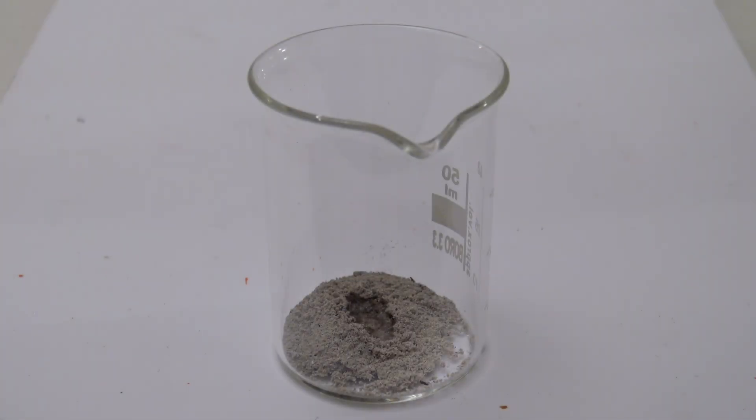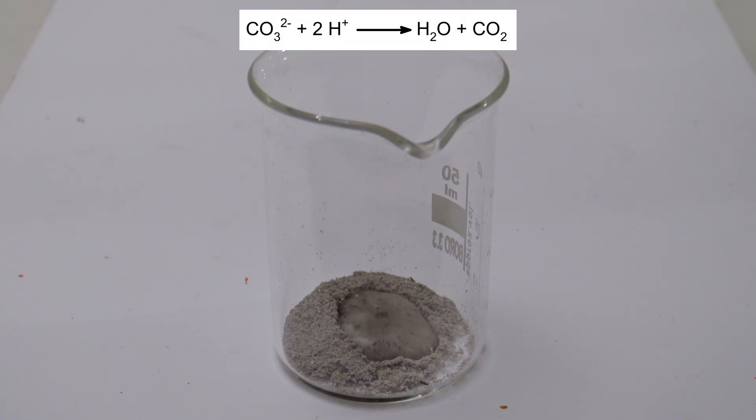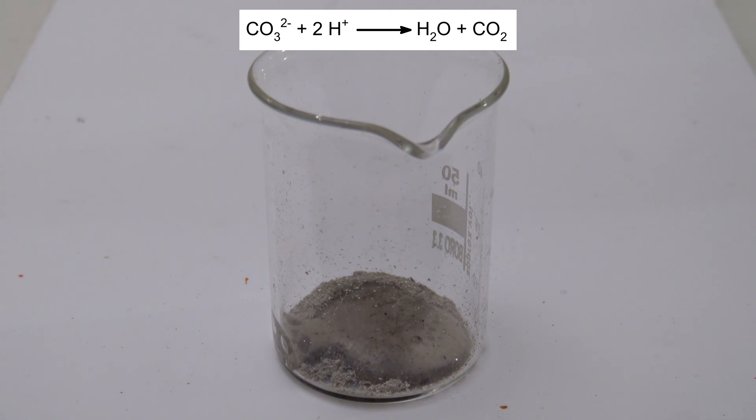When acid is added to wood ash, the formation of gas is obvious. A large portion of ash consists of carbonates, so the gas should be CO2.